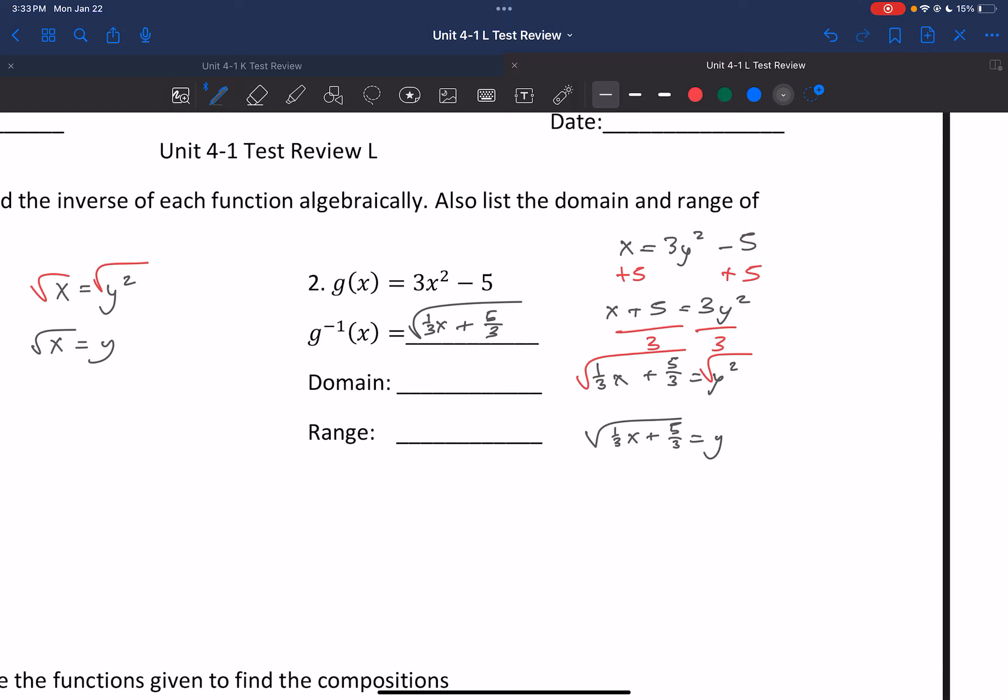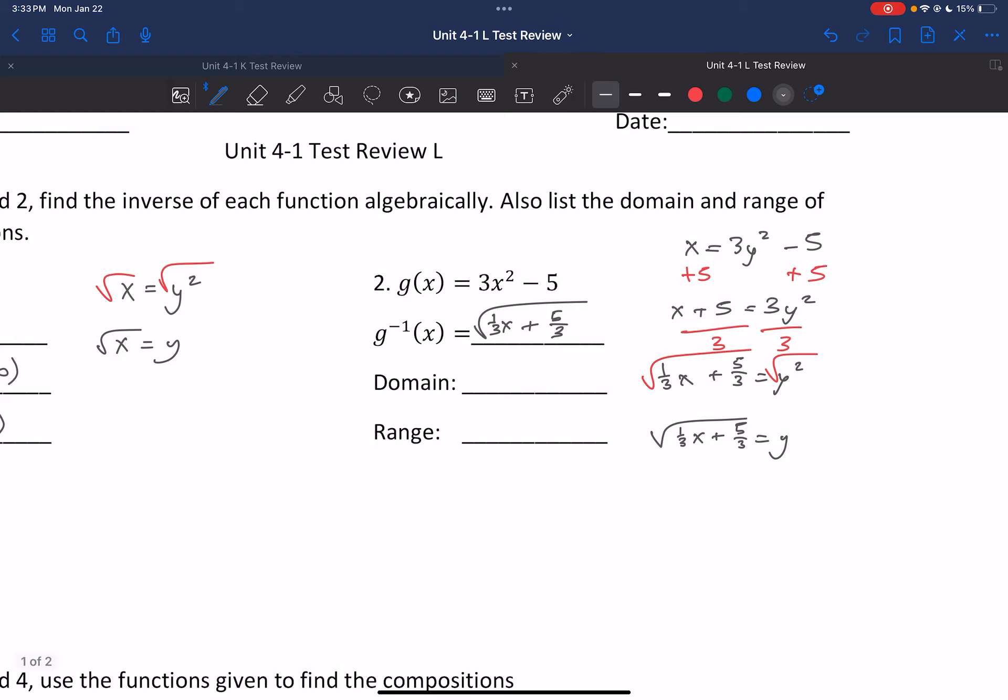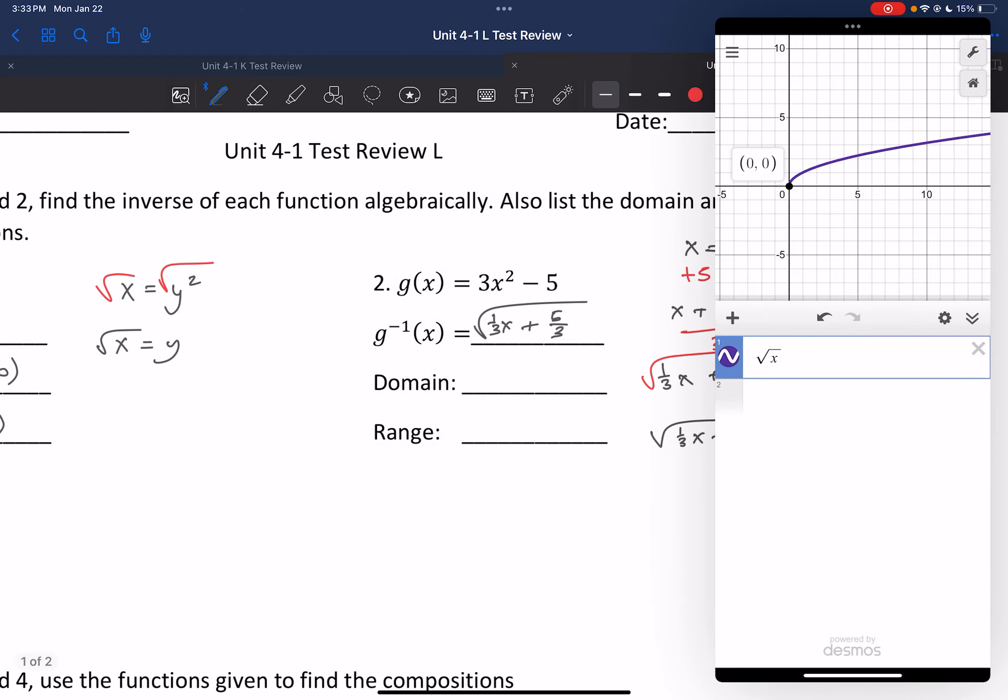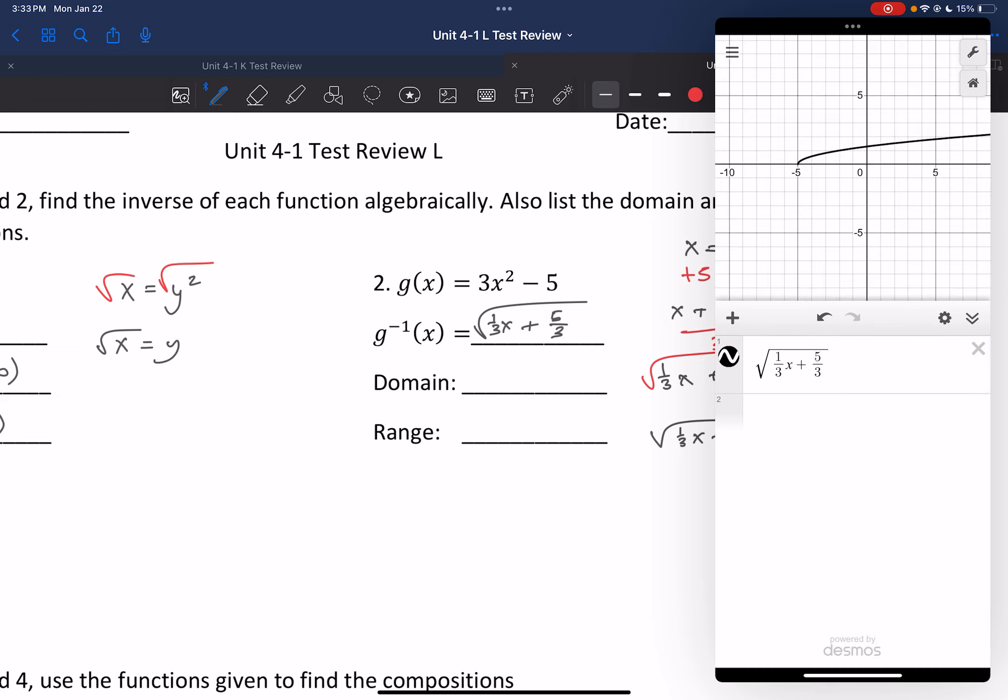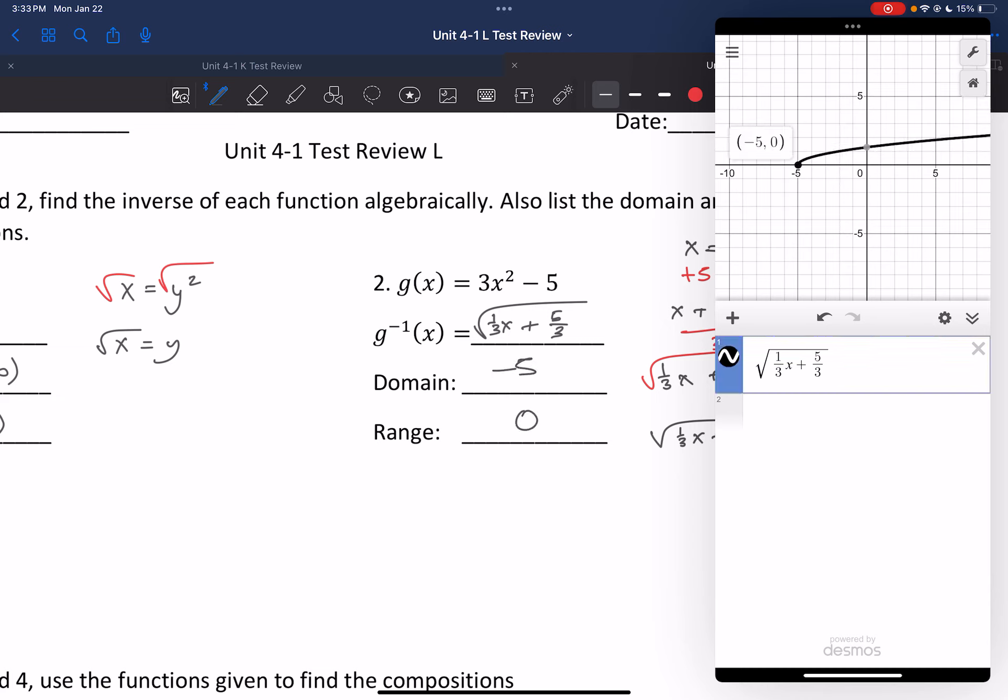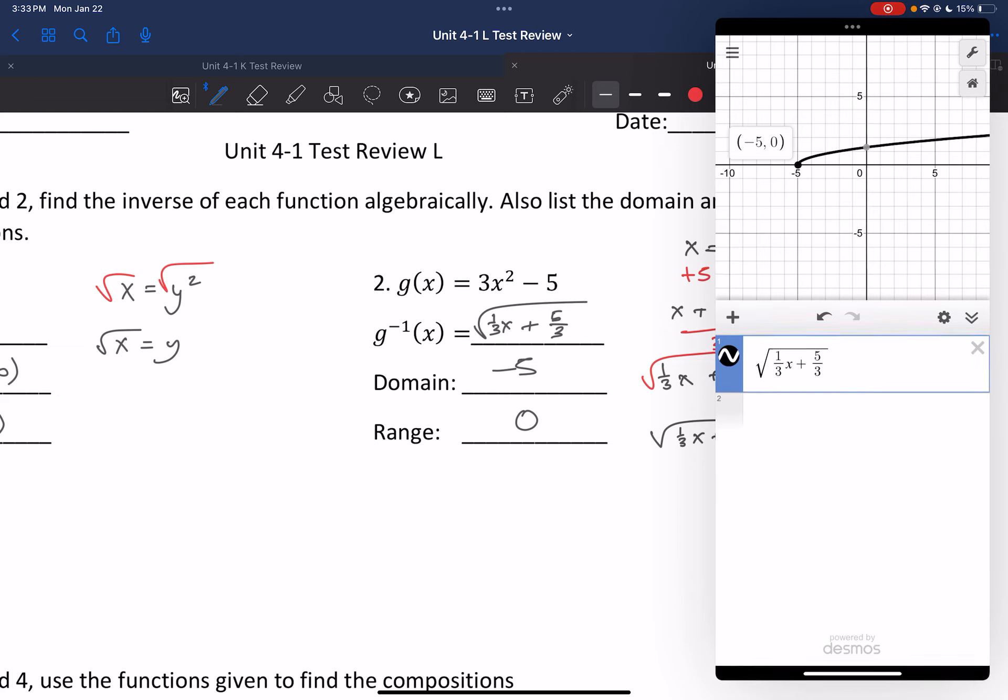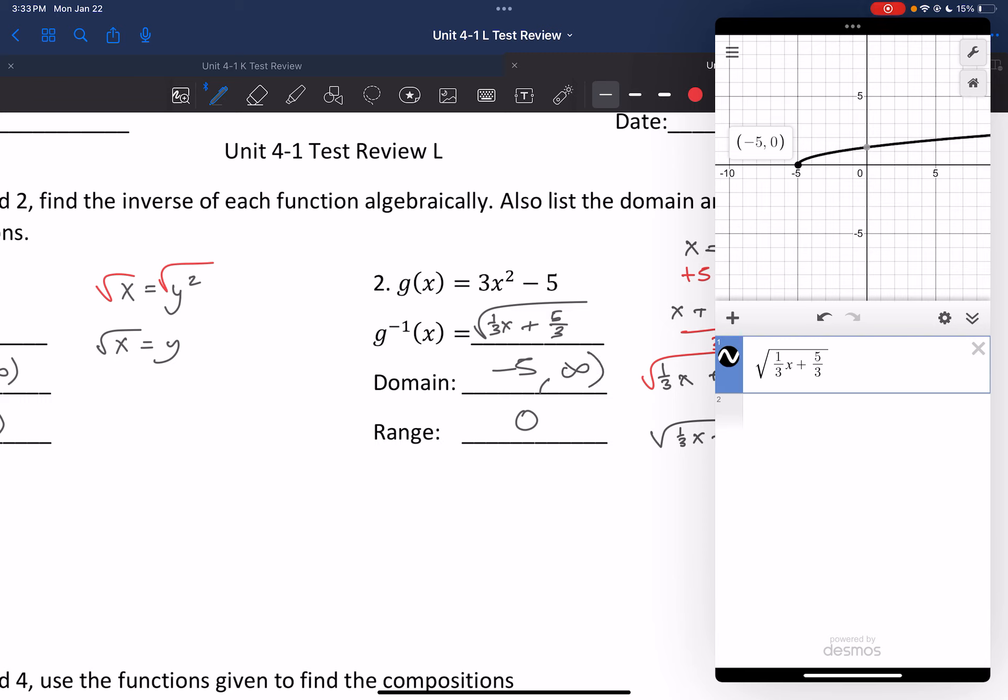All right. Now our domain and range. Easiest way to deal with this is graph it. So let's do exactly that. I'm going to plug this in. Square root, 1/3 x plus 5/3. If I graph it, my starting point is negative 5, 0. So my domain starts at negative 5. My range starts at 0. I'm going to the right, so my domain is going towards positive infinity. I'm going up, so my range is going towards positive infinity.